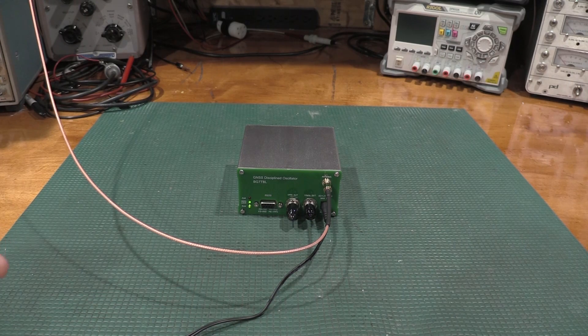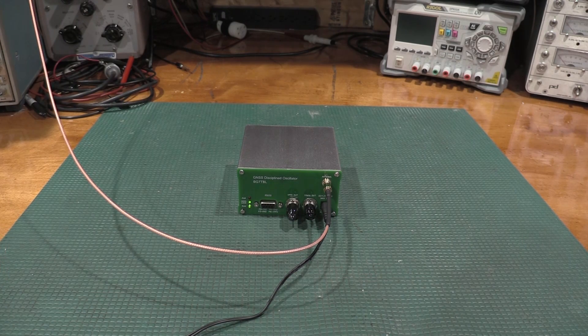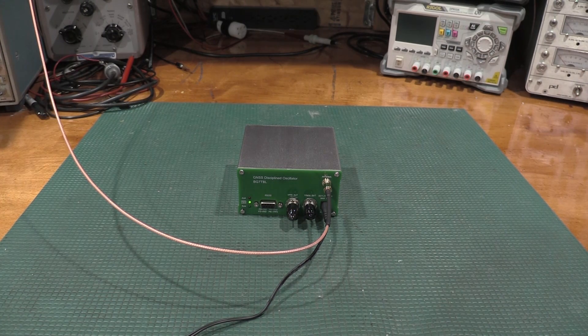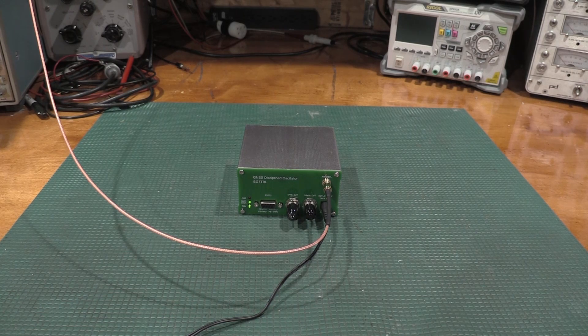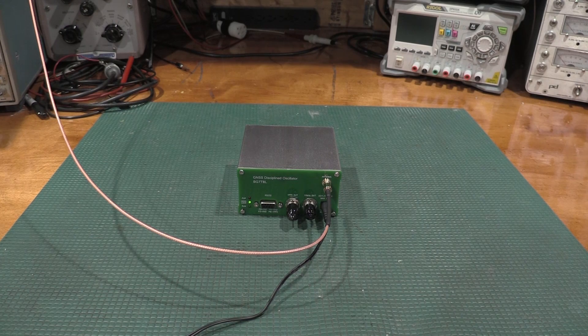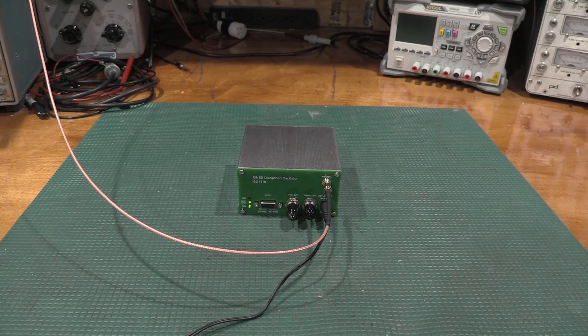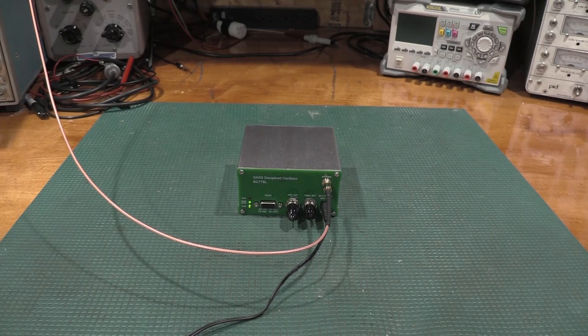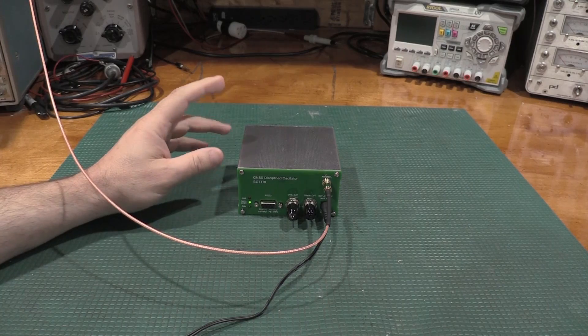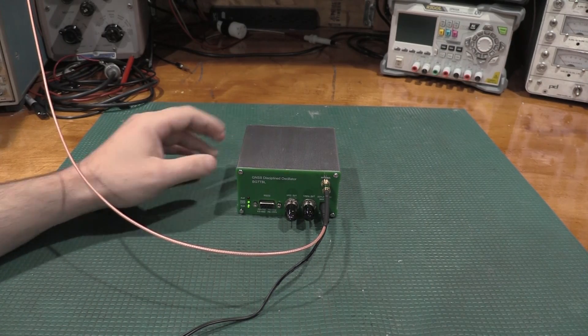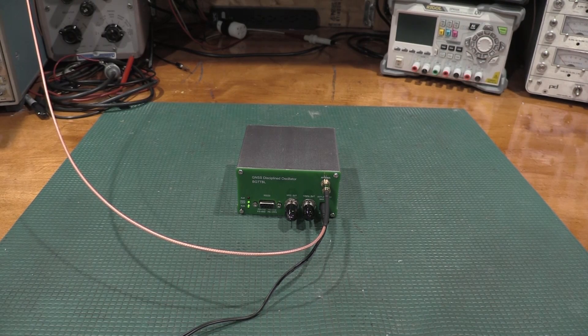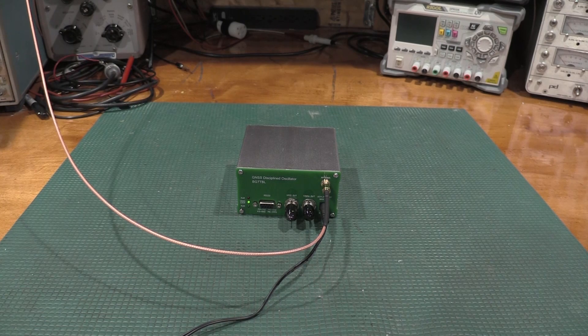I have a GPSDO that ties to a rubidium unit in the lab for stability because I have to align calibration equipment. I need some very stable clocks, and that's about as stable as I can get at cost reasonable. A hydrogen maser hits at the $150,000 price point. I do not have one of those, for obvious reasons.